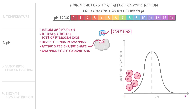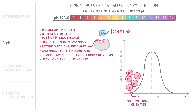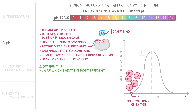The enzymes then can't bind to substrates, so fewer enzyme-substrate complexes form, and gradually the enzymes stop working. Overall, this continually decreases the rate of reaction as we get closer to pH 0, until there are no functional enzymes left. On our graph, we can see the rate of reaction decreases as the pH drops below the optimum. Then, when the pH increases to the enzyme's optimum pH — the pH at which the enzyme is most efficient — we get the maximum rate of reaction, shown as the peak on our graph.